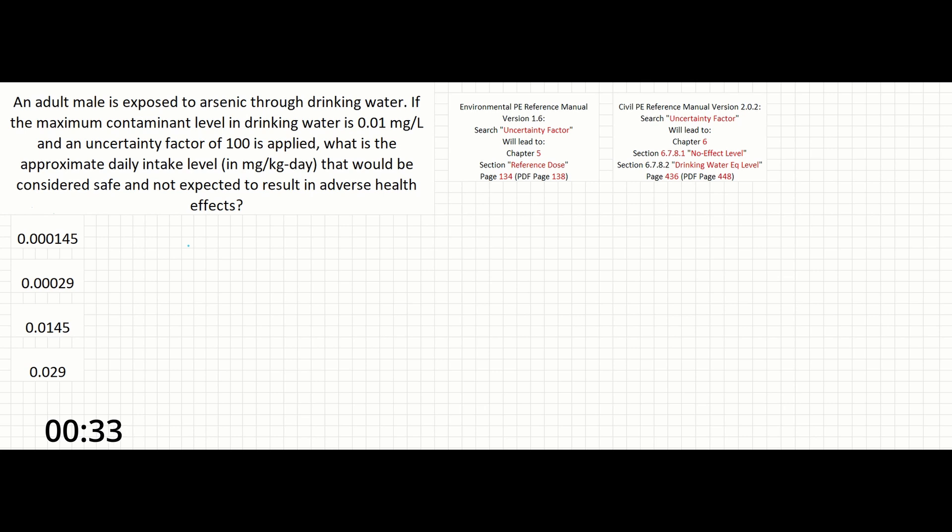So if you don't know where to start with this problem, we can begin by trying to pull some key words out of the problem statement. Searching for the term uncertainty factor will bring you right to the sections you need in either the civil or the environmental manuals.